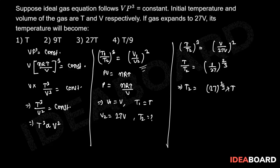Or we can write T₂ will equal to 3 to the power 3, because 27 can be written as 3 to the power 3, whole to the power 2 by 3 into T. Or finally we can say T₂ is equal to 9T.